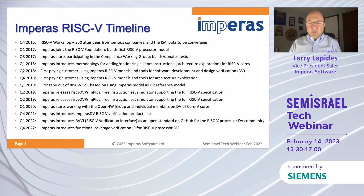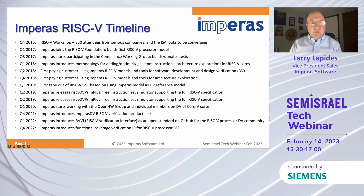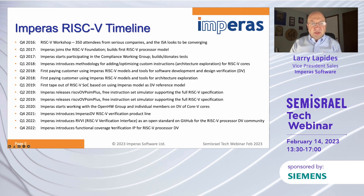Here's a bit of a timeline of Empiris and RISC-V. We built our first model six years ago for RISC-V. We had our first paying customer about five years ago. The first tape-out of a SOC that used the Empiris model for DV was about four years ago. And over the last few years, we've been working on various things, mostly focused on DV.